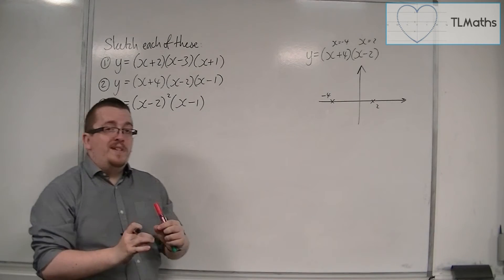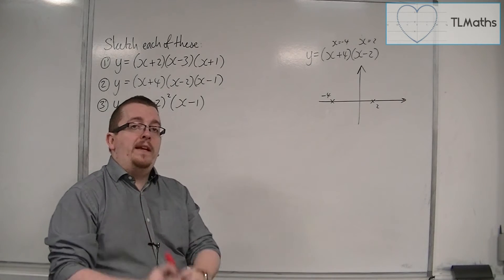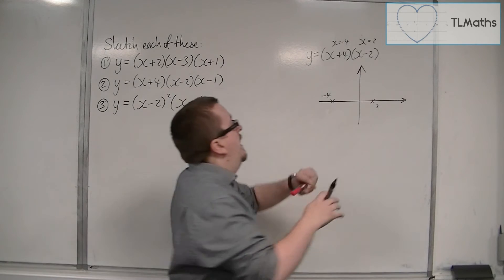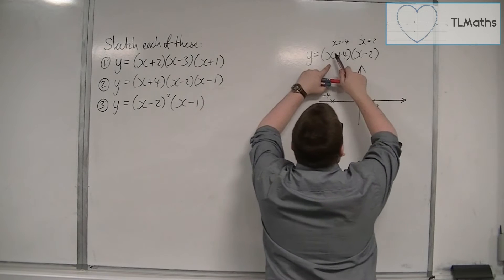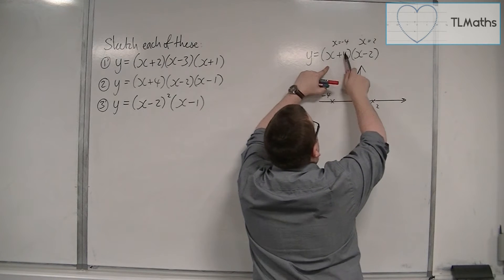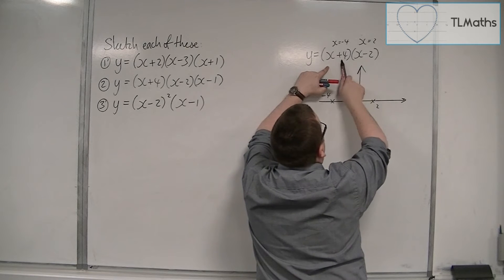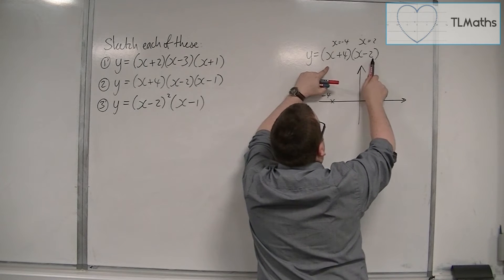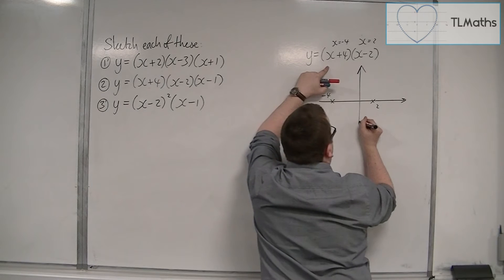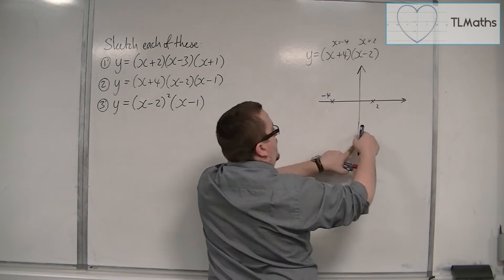Now, I can also identify where it is crossing the y-axis. I can see that from substituting 0 in, I get 4 times minus 2, or just look at multiplying the final numbers together. 4 times minus 2 is minus 8, so it's crossing the y-axis at minus 8.